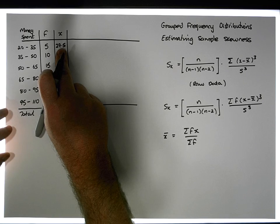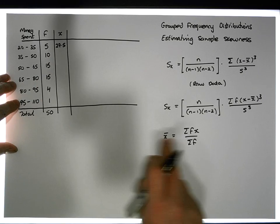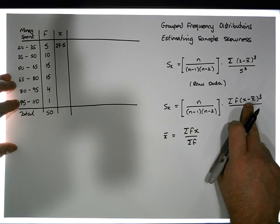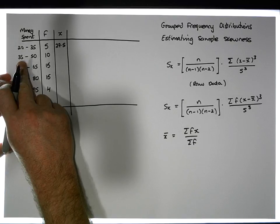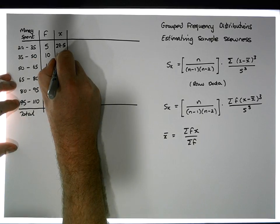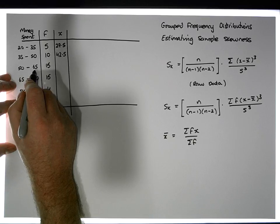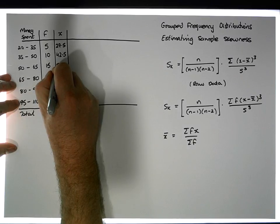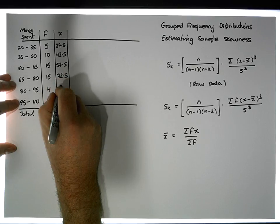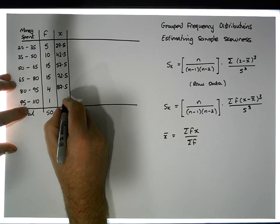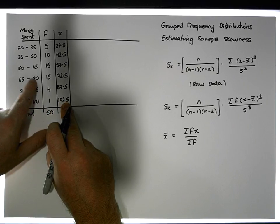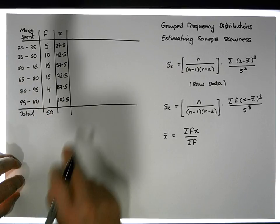There will be some estimation error introduced, but this is the standard approach. Continuing with the midpoints: 35 + 50 = 85, divided by 2 gives 42.5; then 57.5, then 72.5, then 87.5, and finally 102.5. These are the midpoints of each respective class.